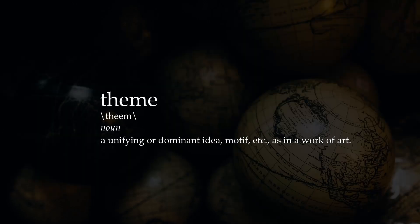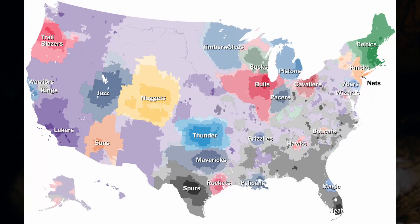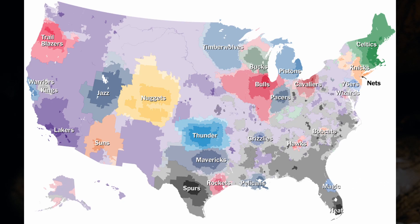As opposed to reference maps, there are thematic maps, and in this case they're going to have a dominant theme — starting with a categorical map, which assigns different colors to many different categories. For example, this map's theme is going to be NBA teams, and each team is going to be assigned their own color.